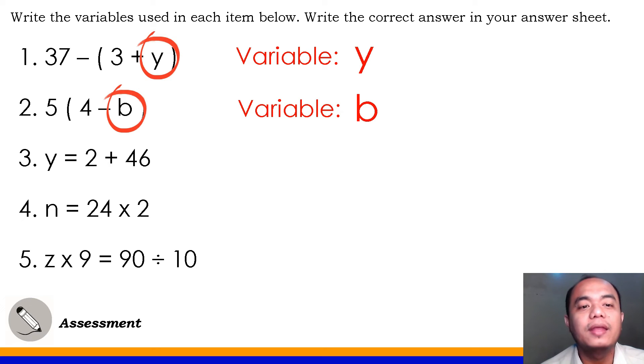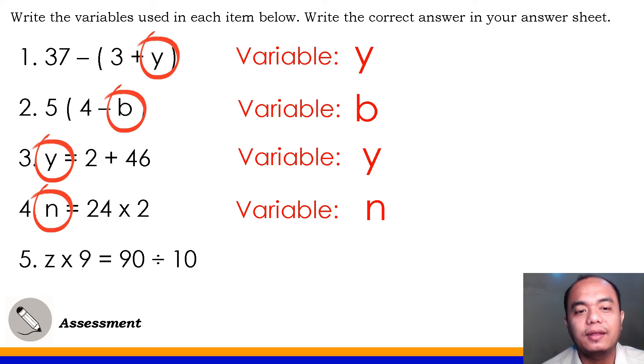Number 3, what variable was used? Very good, it's letter Y. Number 4, what variable was used in item number 4? Yes, correct, it's letter N. Number 5, very good, it's letter Z.